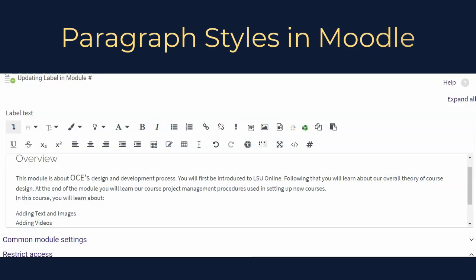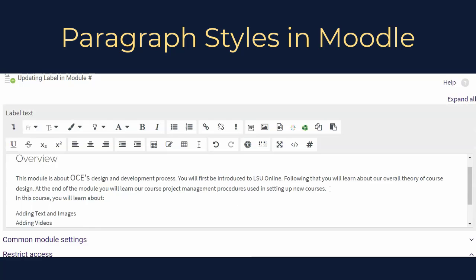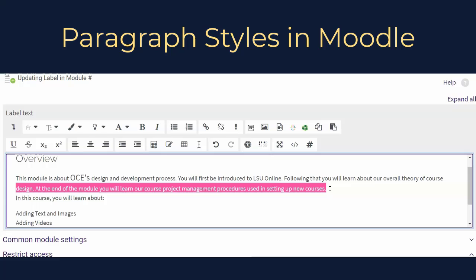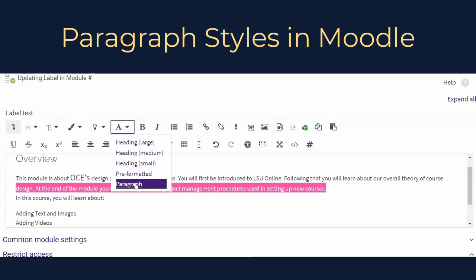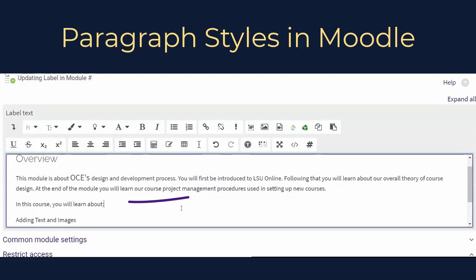To add paragraph style to text in Moodle, enter your desired text and then highlight all the body text in that editing area. Click the Paragraph Styles button on the toolbar, and from the drop-down, select Paragraph. All of the selected text should update immediately.